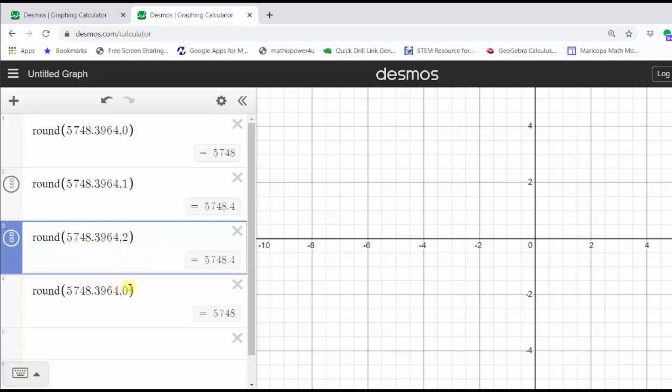And then we'll go to cell four and change the zero to a three, which will round the number to three decimal places, or the thousandths place value. And now let's record this information in our work.